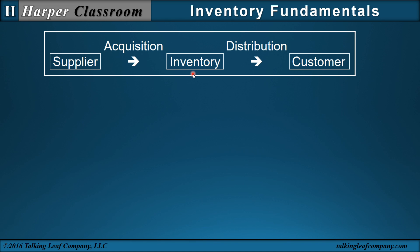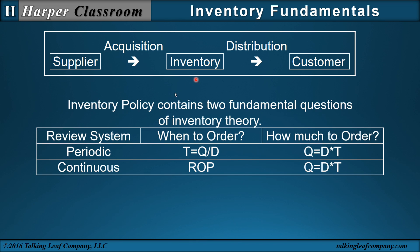The input-output model for inventory starts with inventory. We acquire items from our supplier, and that increases inventory. We distribute items to our customer, and that decreases inventory. The inventory policy contains the two fundamental questions of inventory theory: how much to order, and when to order — specifically, when to order from our supplier and how much to order from our supplier to satisfy our demand from our customer.